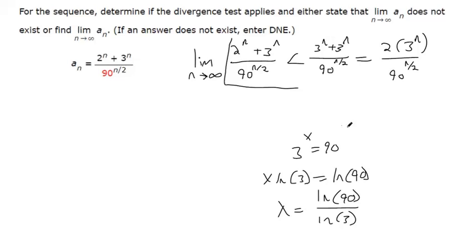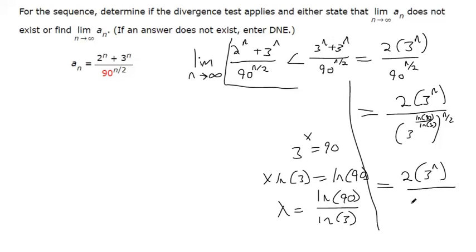So what we just said is that if you raise 3 to this power, then it's going to equal 90. So in other words, the denominator is going to be 3 to the natural log of 90 divided by the natural log of 3, and then that's all to the n over 2 power. And so power on top of power is multiplied. So if you want to rewrite it a little bit more, that's the same thing as 3 to the natural log 90 n over 2 natural log 3.